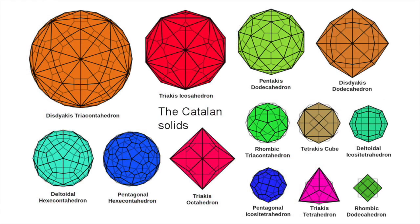A dual of a polyhedron is another polyhedron in which faces and vertices occupy complementary locations. The duals of the Archimedean solids are known as the Catalan solids.